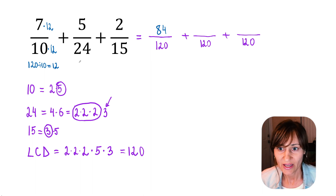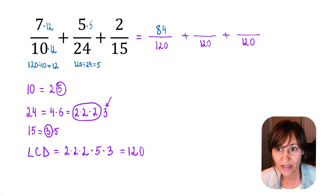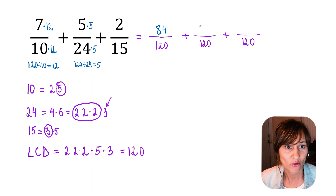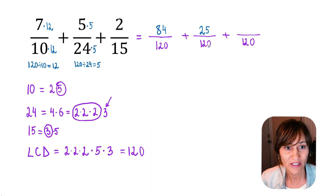Now the second fraction. 120 divided by 24 is 5. So we are multiplying the numerator and denominator by 5. 5 times 5 is 25, so the new numerator is 25. 24 times 5 is 120. We rewrote the second fraction with a denominator of 120.